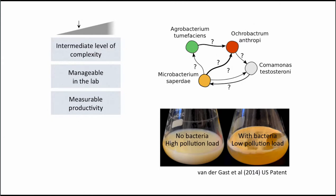This system is a first step toward the complex communities we see in the environment. They're quite manageable in the lab — they all grow overnight, they're relatively easy to work with, they're all aerobic, and we can measure productivity in terms of pollution load. We can study what happens if you change certain things in the environment or add or remove different species, and how that changes the efficiency or functioning of the ecosystem.